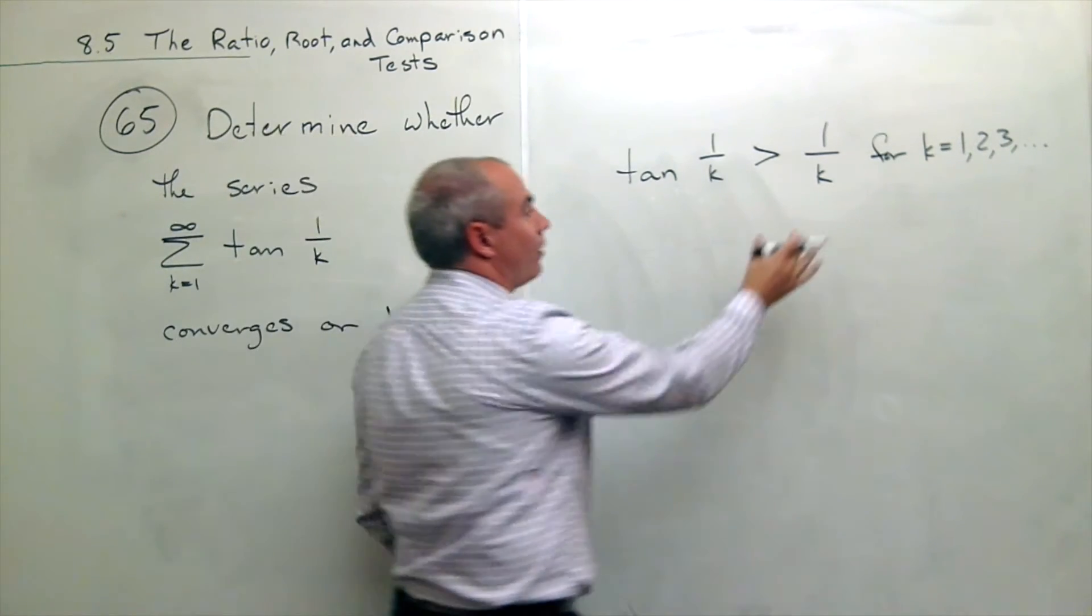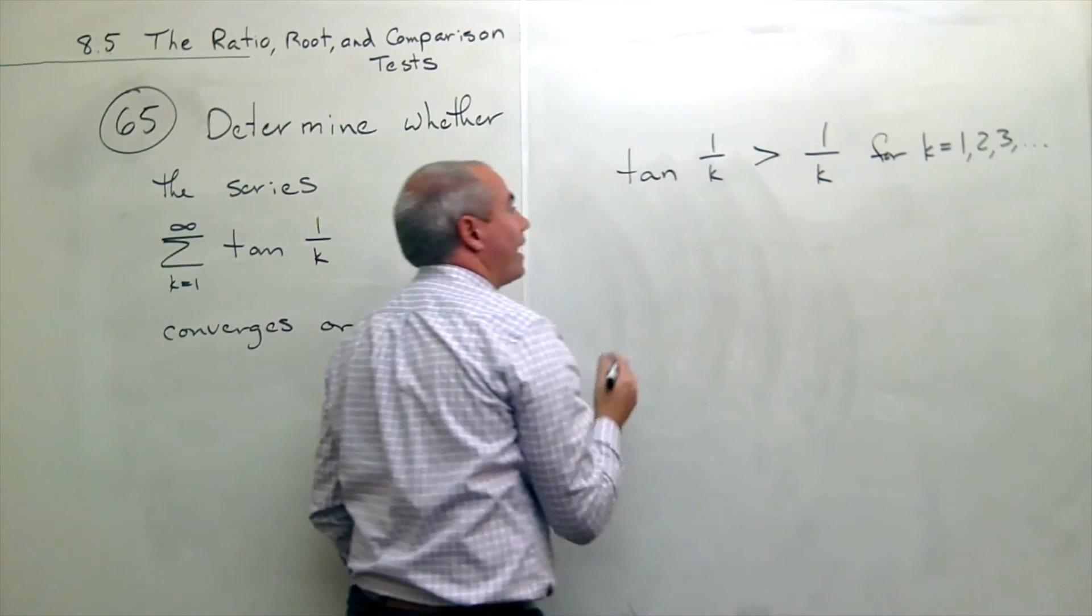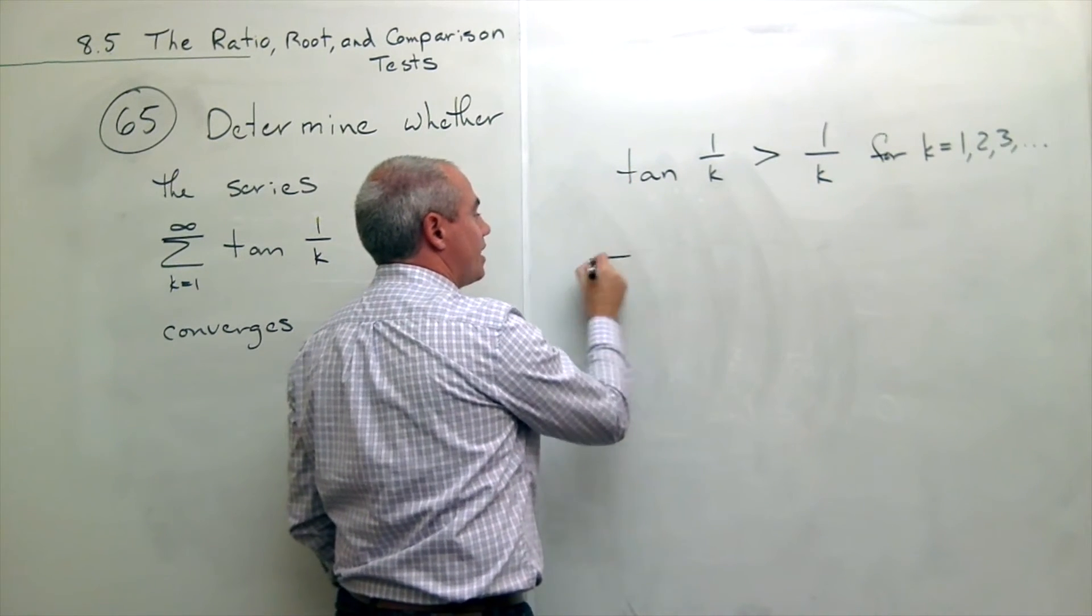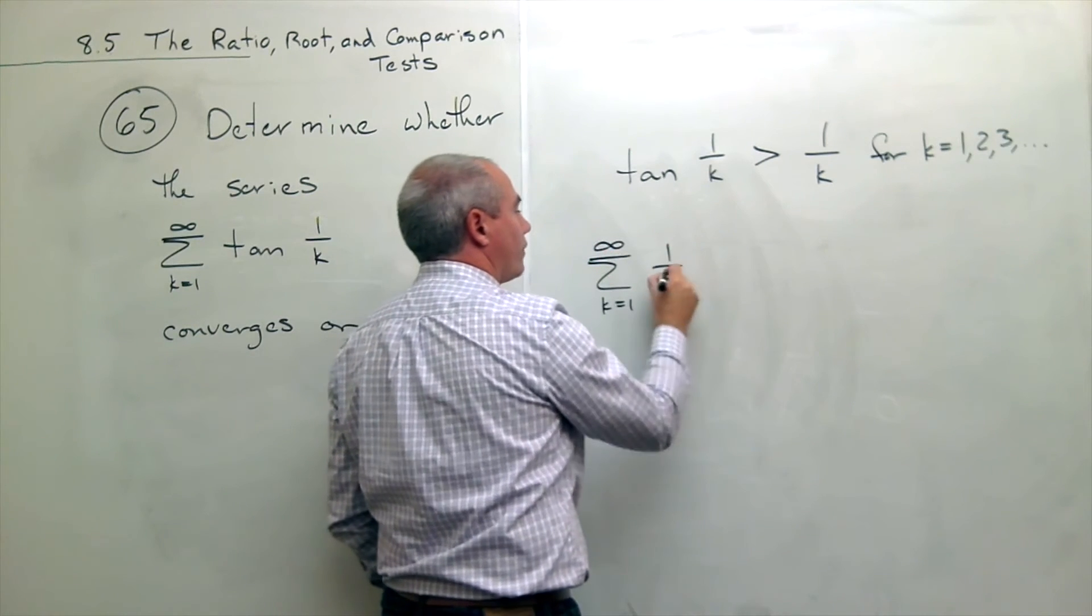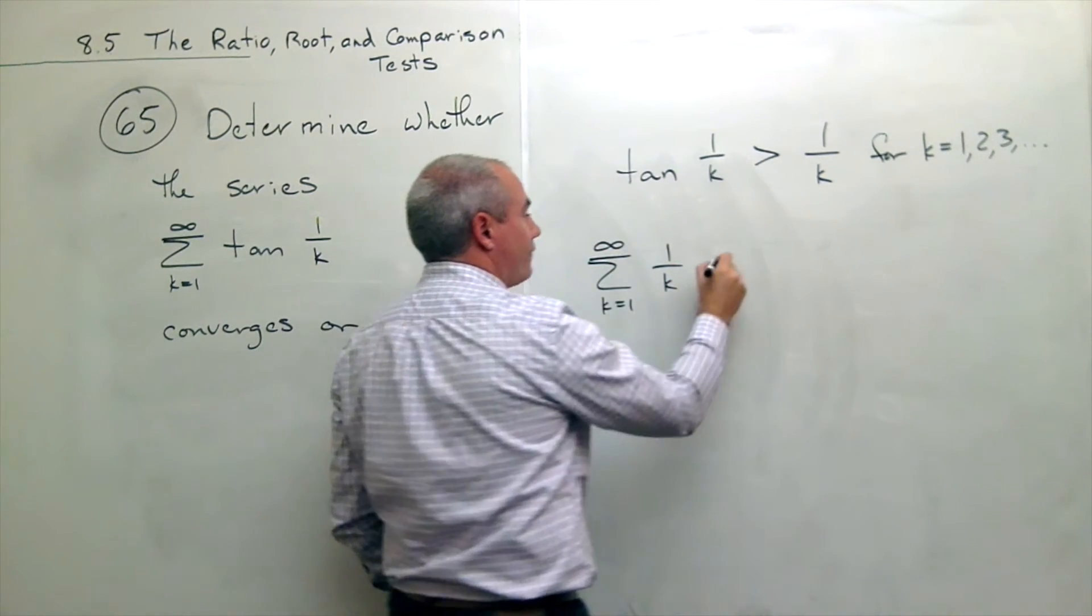Once I know that that is true, then I can say something about, what do I know about this guy as a sum? The sum k going from 1 to infinity of 1 over k, well, that diverges.